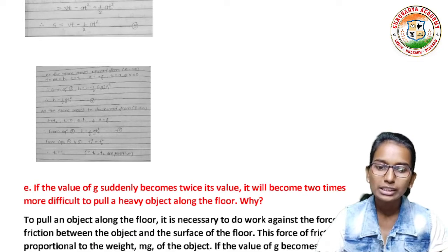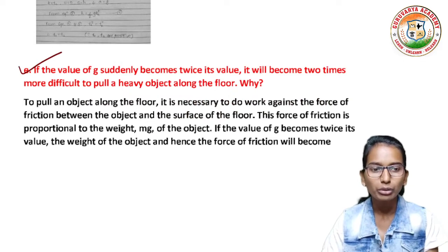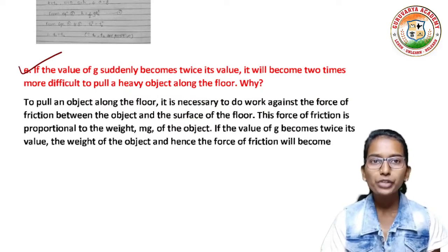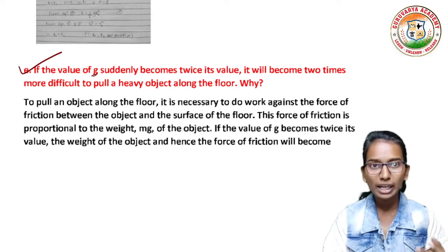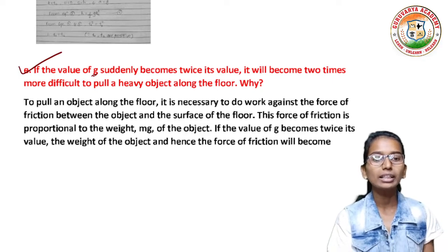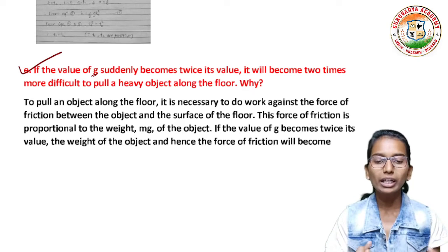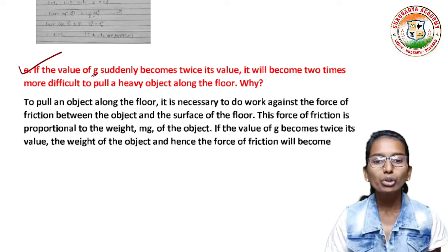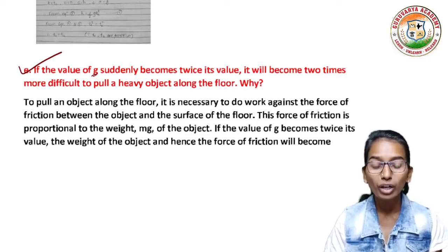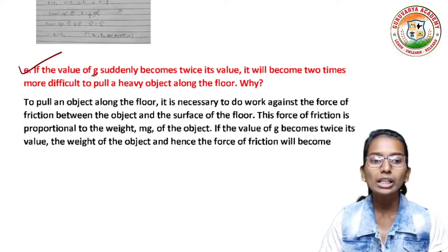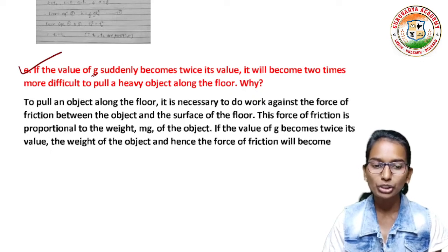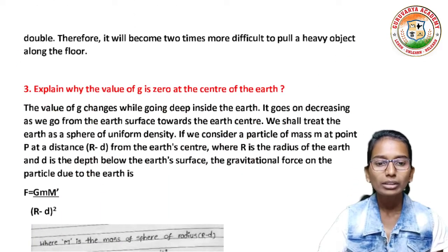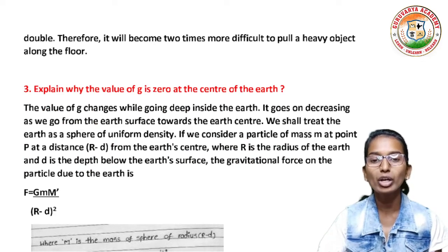Next question: if the value of g suddenly becomes twice its value, it will become two times more difficult to pull a heavy object along the floor. Answer: to pull an object along the floor, it is necessary to do work against the force of friction between the object and the surface. The force of friction is proportional to the weight mg of the object. If g becomes twice its value, the weight and hence the force of friction will become double. Therefore, it will become two times more difficult to pull a heavy object along the floor.